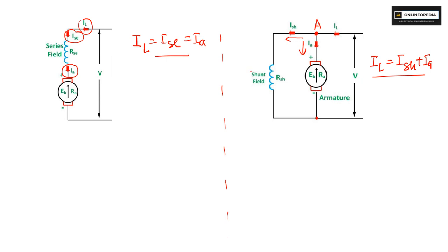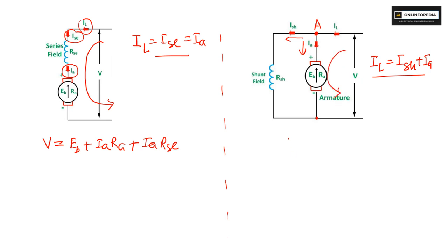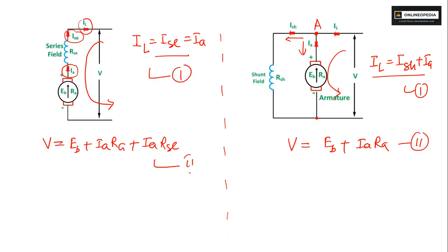Now if we apply KVL inside the loop for series motor, you will get V is equal to Eb plus Ia·Ra plus Ia·Rsc. And for shunt motor, applying KVL gives V is equal to Eb plus Ia·Ra. You can summarize it as Eb equals Ia·(Ra + Rsc) for series motor.